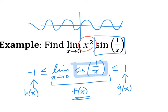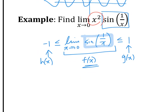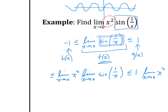We've stuck sine of 1 over x between negative 1 and 1, but that doesn't solve the original problem, which has x squared in it. So we're going to attach x squared into this function. We'll take the inequality for sine of 1 over x and multiply all sides by the limit as x goes to 0 of x squared, using the limit law that says we can split the limit of a product.